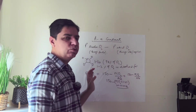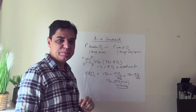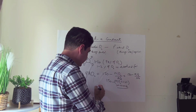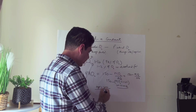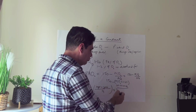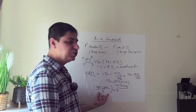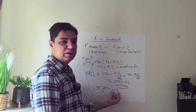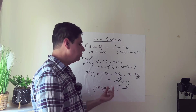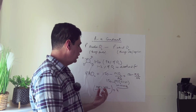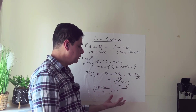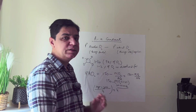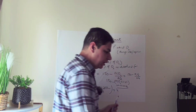Once you have PAO2, subtract the arterial O2 (PaO2) from it to get the AA gradient. The normal AA gradient increases with age. The formula for normal AA gradient is: age in years divided by 4, plus 4. For example, a 1-year-old has an AA gradient of 4.25; a 2-year-old, 4.50; a 4-year-old, 5.0.